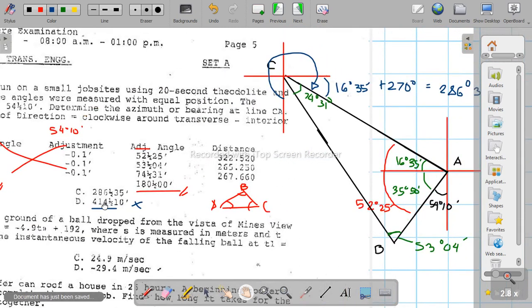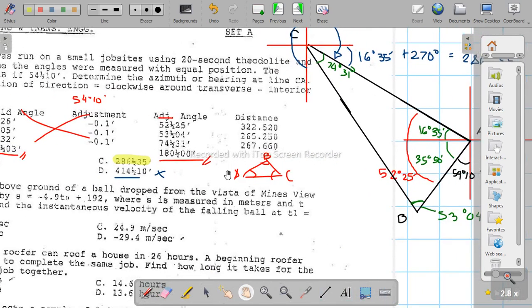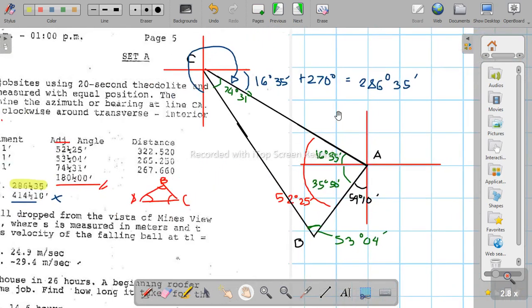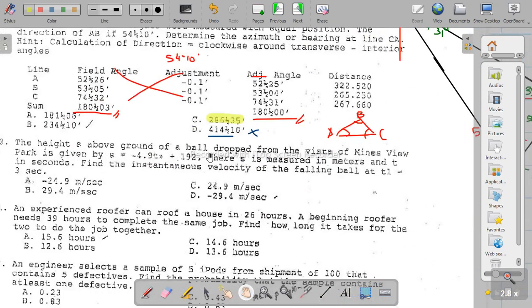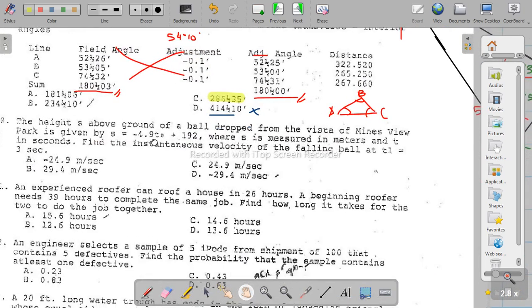Adding 270 degrees plus 16 degrees 35 minutes gives 286 degrees 35 minutes. That's our answer. In the PDF they used north azimuth but got the same result, 286 degrees 35 minutes.